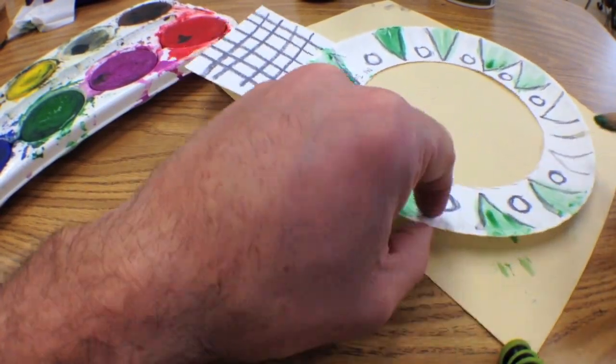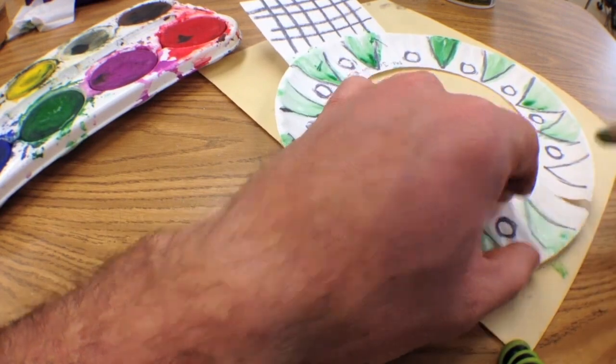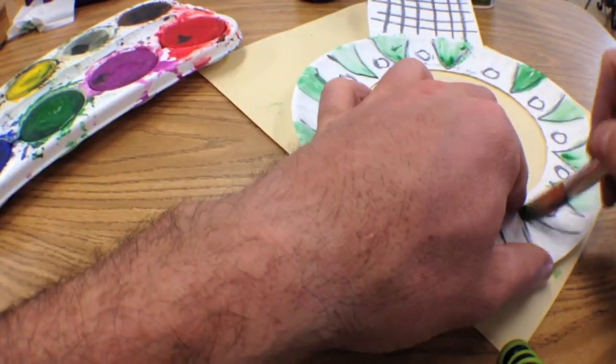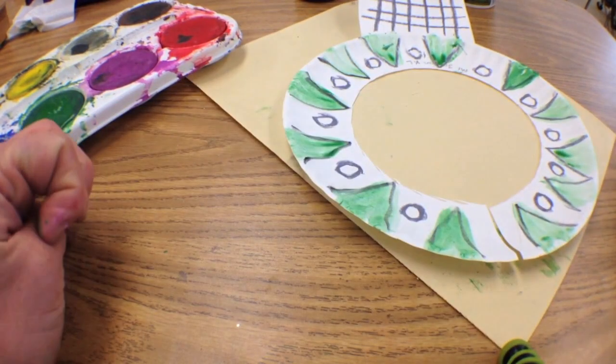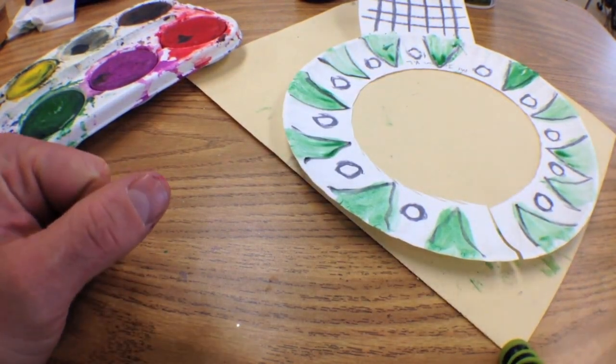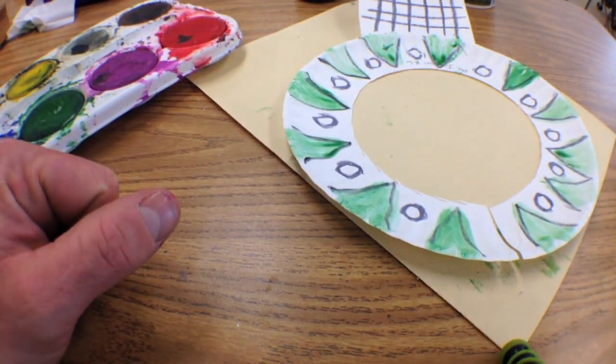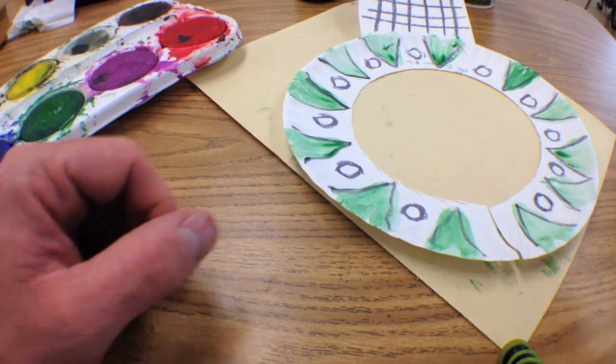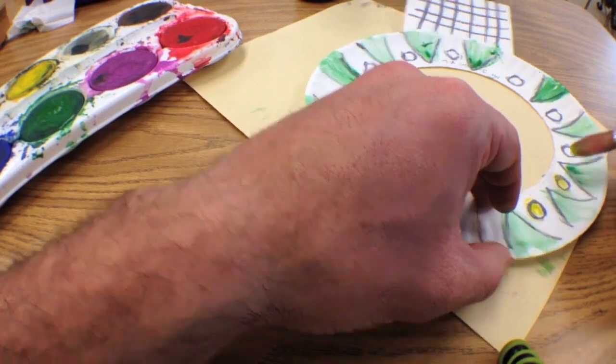So I'm painting all the triangles green. Now I'm going to wash my brush in the water. I'm going to take yellow. I'm going to paint the circles yellow.